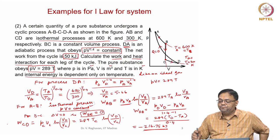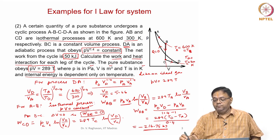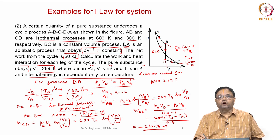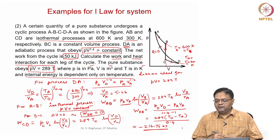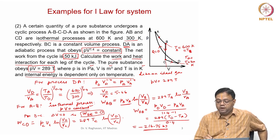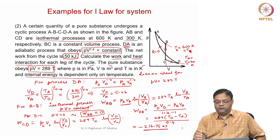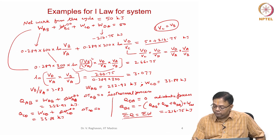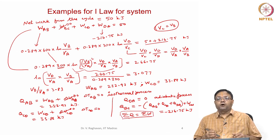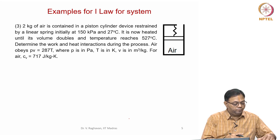The cycle consists of four processes: two isothermal (AB and CD), one constant volume (BC), and one adiabatic (DA) obeying PV^1.4 = constant. The gas obeys PV = 289T and the net work is given as 50 kilojoules. The net work from each process added together, and applying the first law for the cycle (σQ = σW), gives all the required answers.